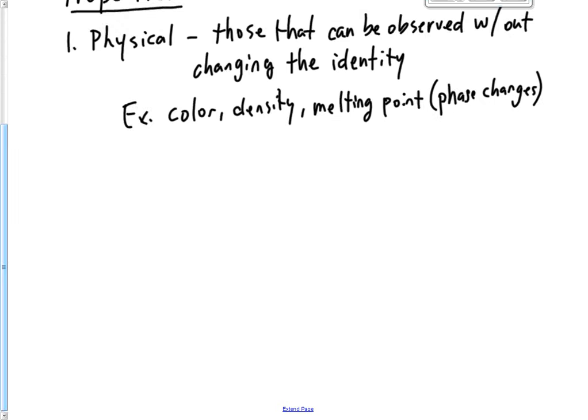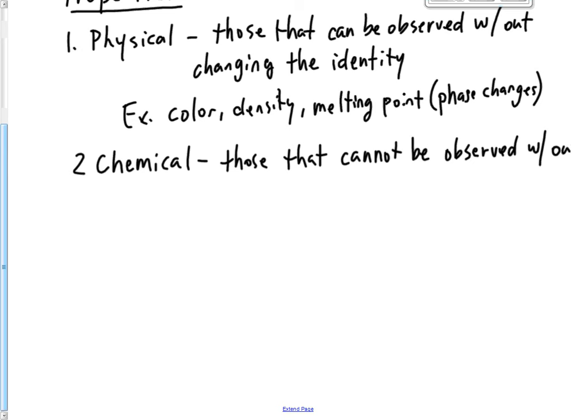All right, and chemical properties are those that cannot be observed without changing the substance. And when we say changing the substance, we mean chemically, on the molecular level.